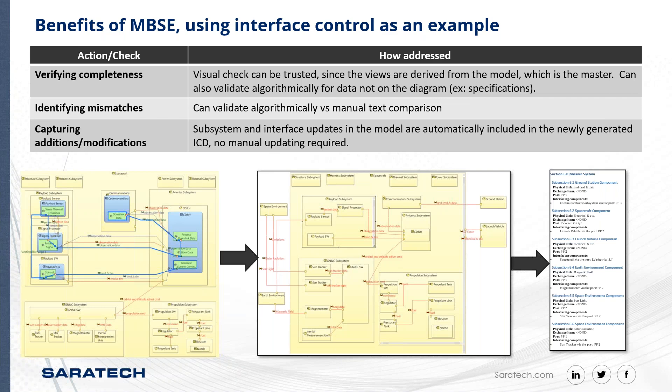Another example is when you're doing additions and modifications. Every time you make a change or add a subsystem in a text document, you have to walk through all the places that subsystem or interface appears and check and fix it. In the model-based case, if you want to add external interfaces — a launch vehicle, Earth environment, space environment, a ground station — to get a new interface control document, you literally just push a button and all those new subsystems and interconnections are in the document and ready to use.